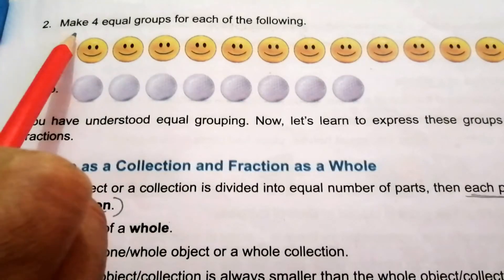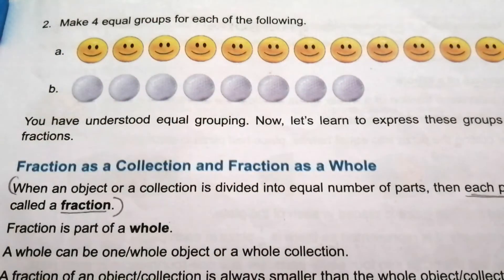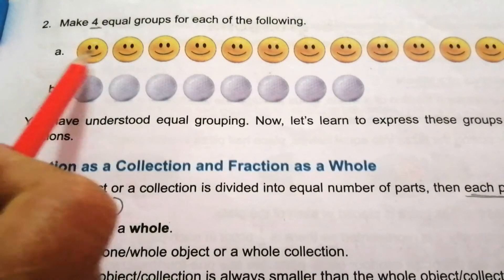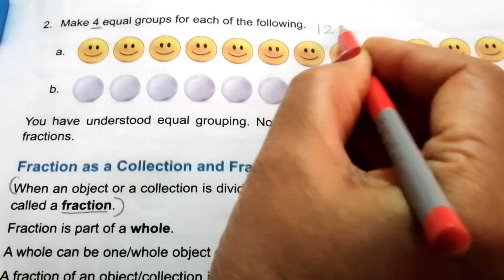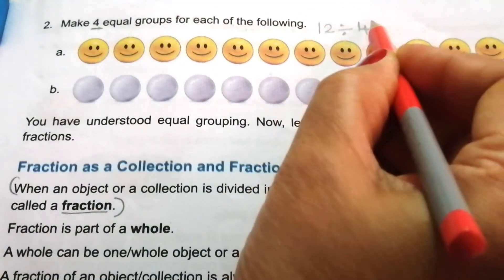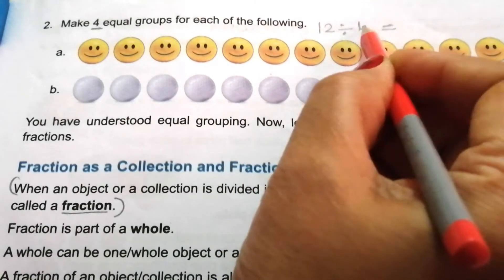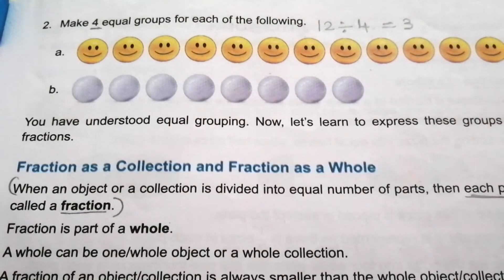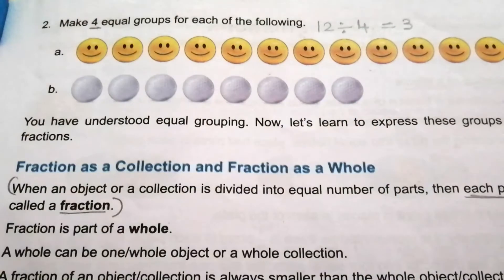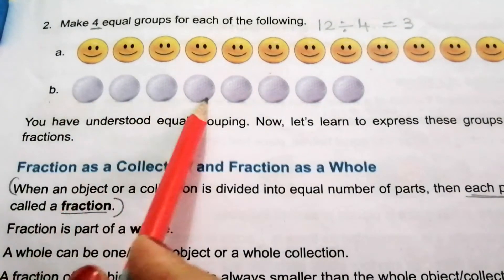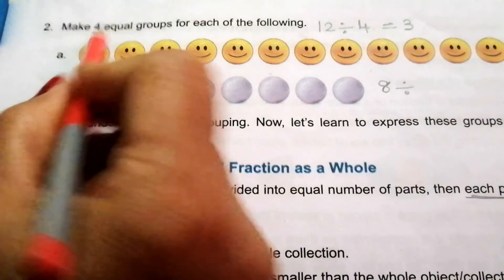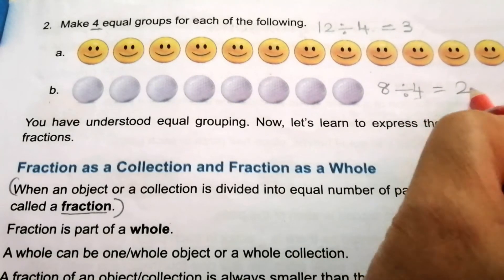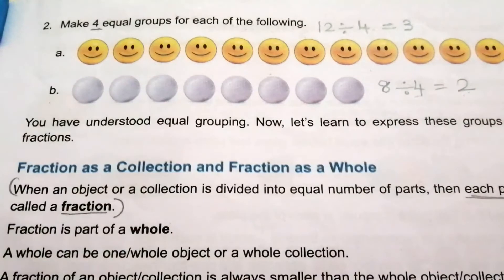In problem 2, make 4 equal groups for each of the following. Here the divisor is 4 and the dividend is the total number of balls. For problem A, the total number of balls is 12. 12 divided by 4: using the 4 times table, 4 threes are 12, so each group has 3 equal number of balls. For problem B, the total number of balls is 8. 8 divided by 4: 4 twos are 8, so each group has 2 equal number of balls.